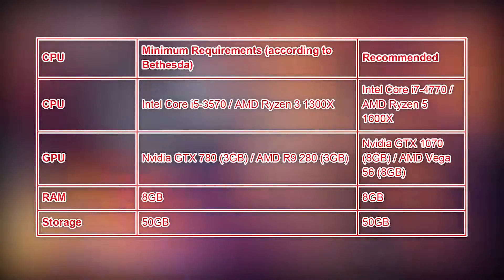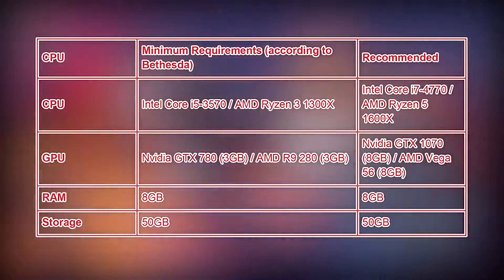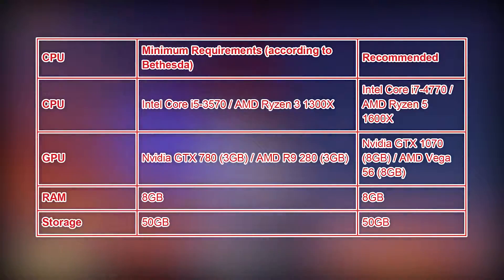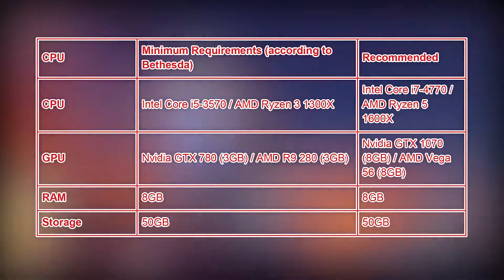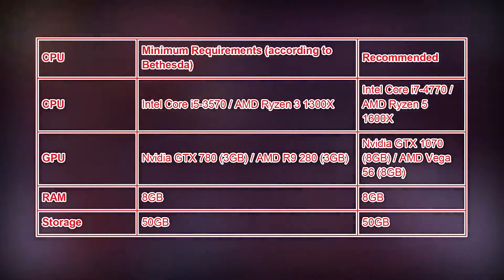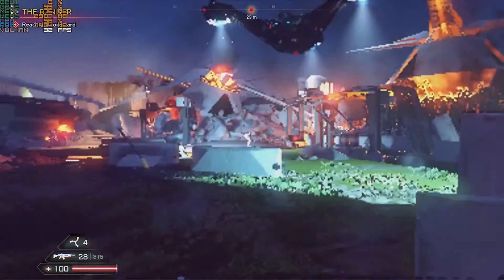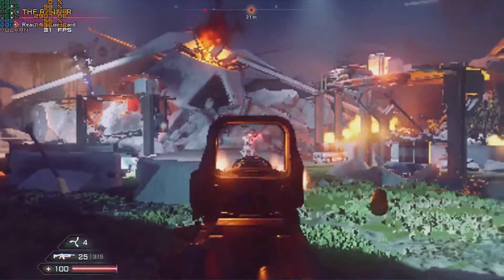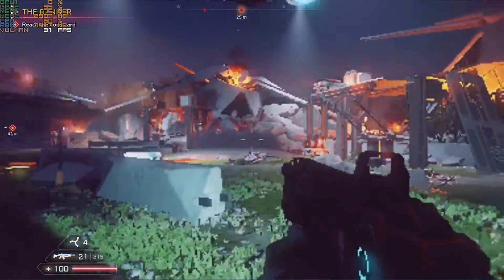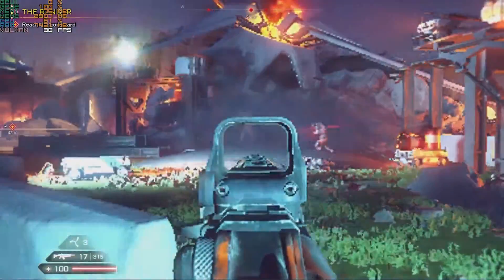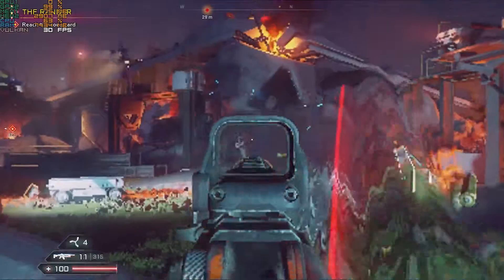According to Bethesda, the minimum system requirements are a discrete NVIDIA GTX 780 or AMD R9 280, while the GTX 1070 or AMD Vega 56 is recommended. However, with the right setting changes you can achieve a very playable 60 FPS on AMD integrated graphics and a modest 30 FPS with Intel HD graphics.